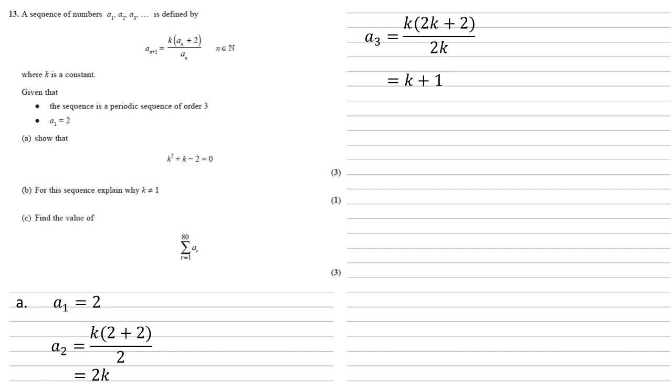We can now find A4 by putting K plus 1 into our formula. So we get that A4 is K times K plus 1 plus 2 all over K plus 1, which simplifies to K times K plus 3 all over K plus 1.